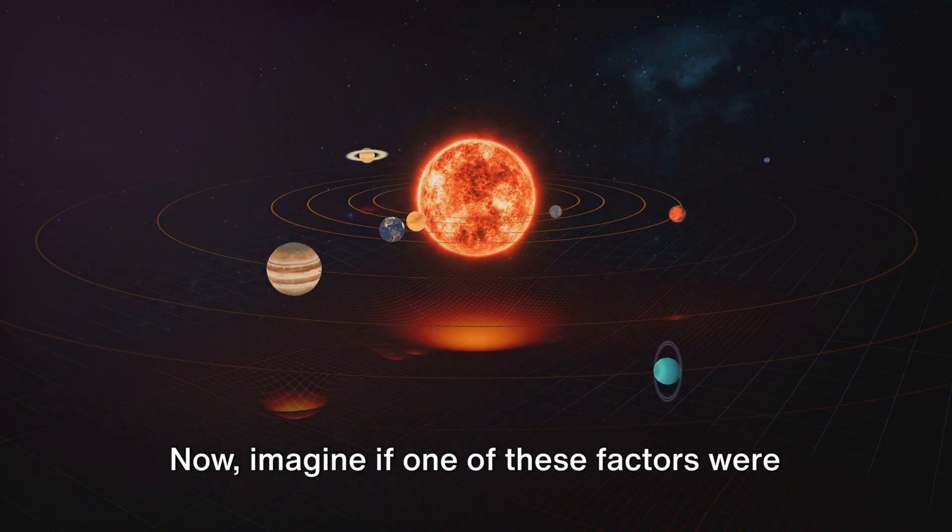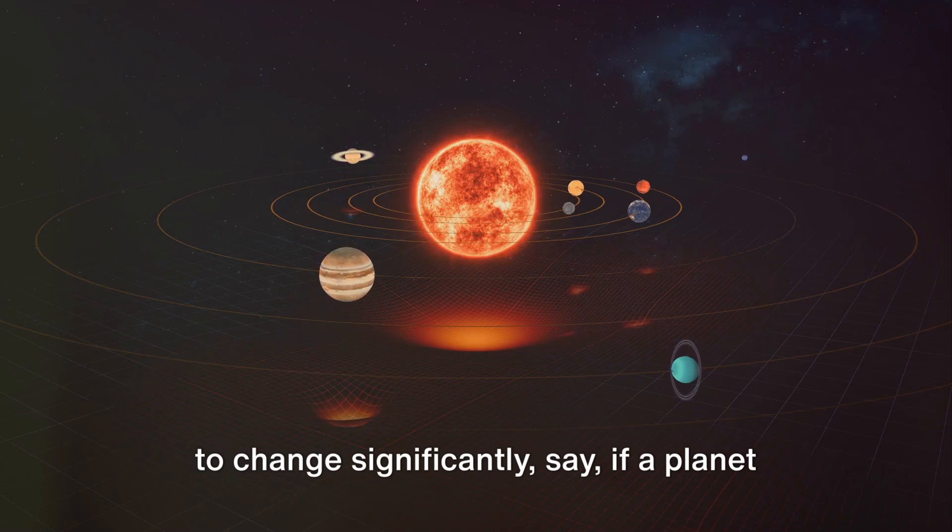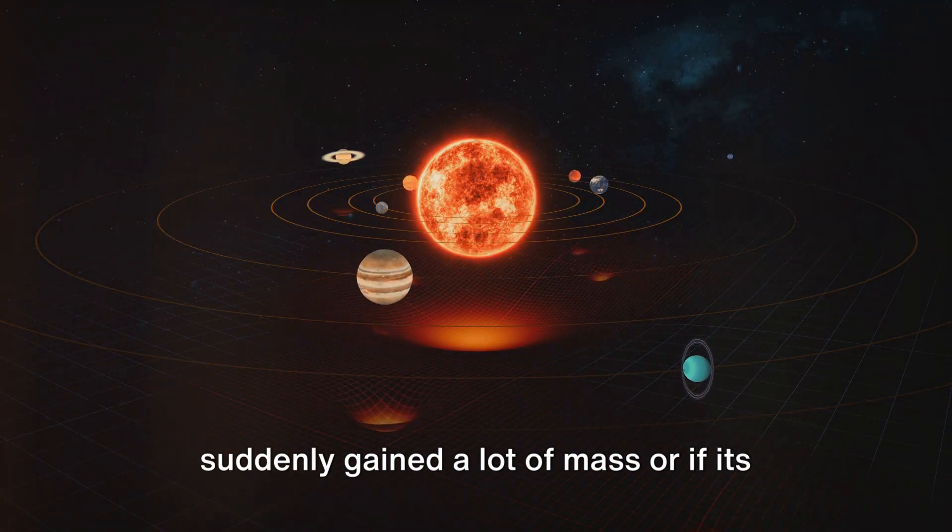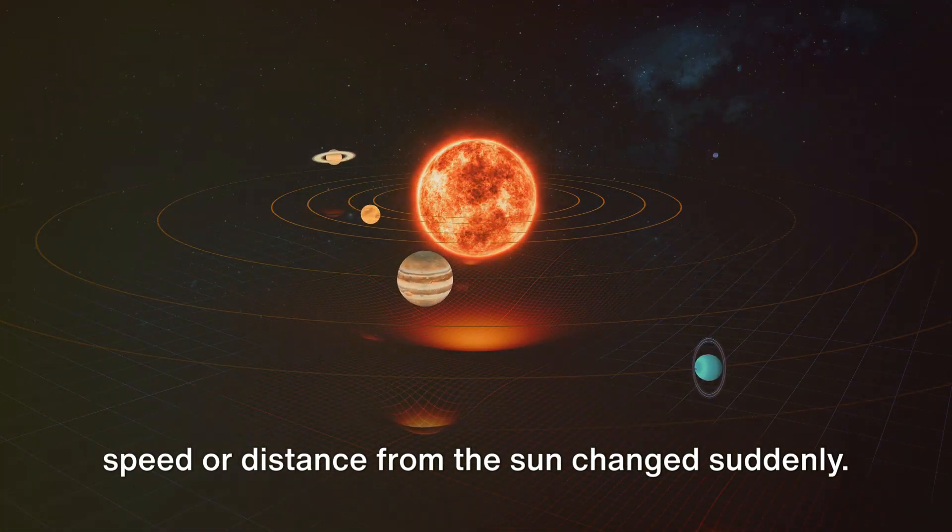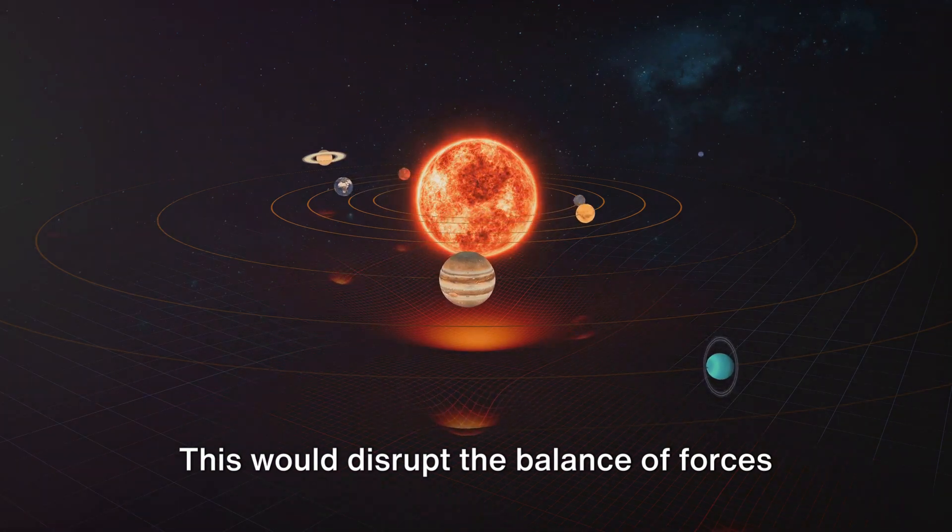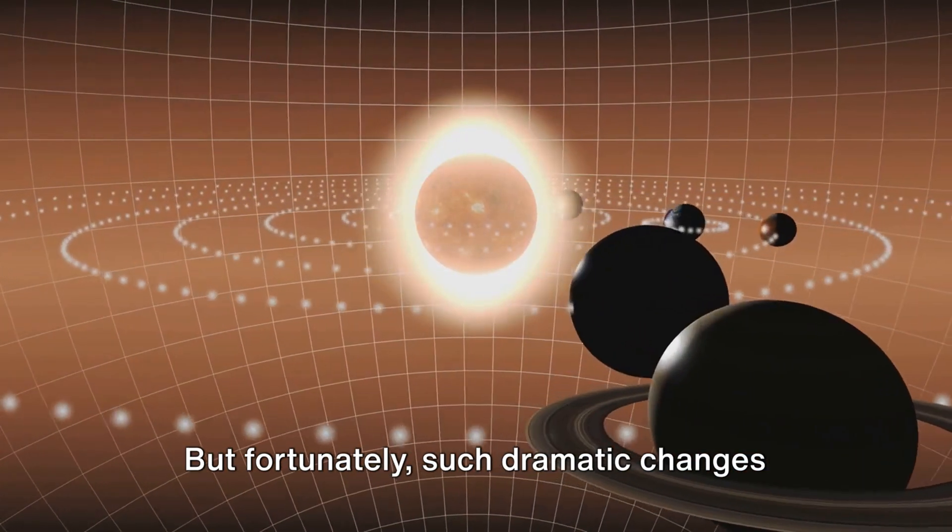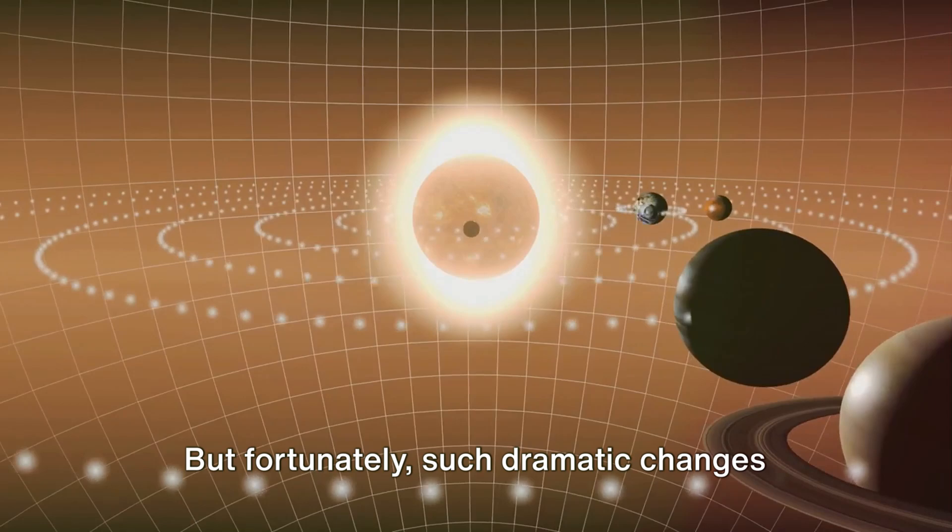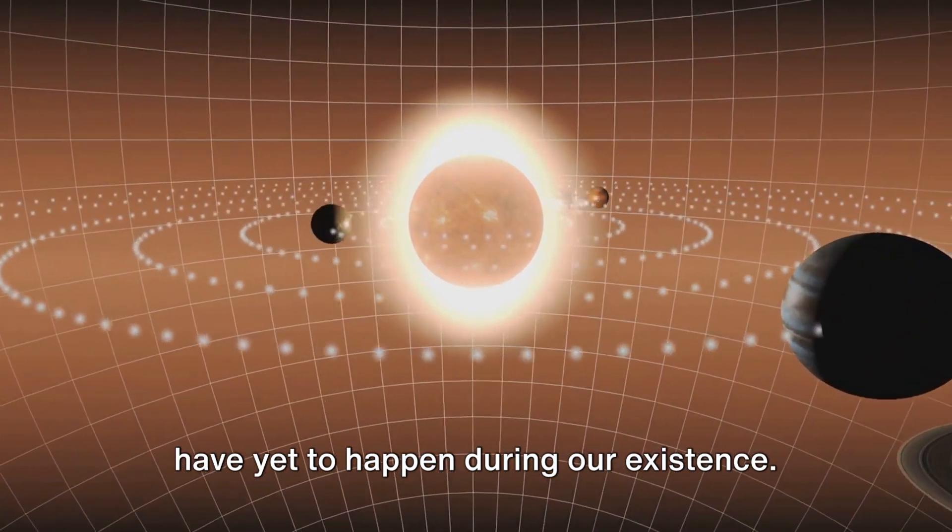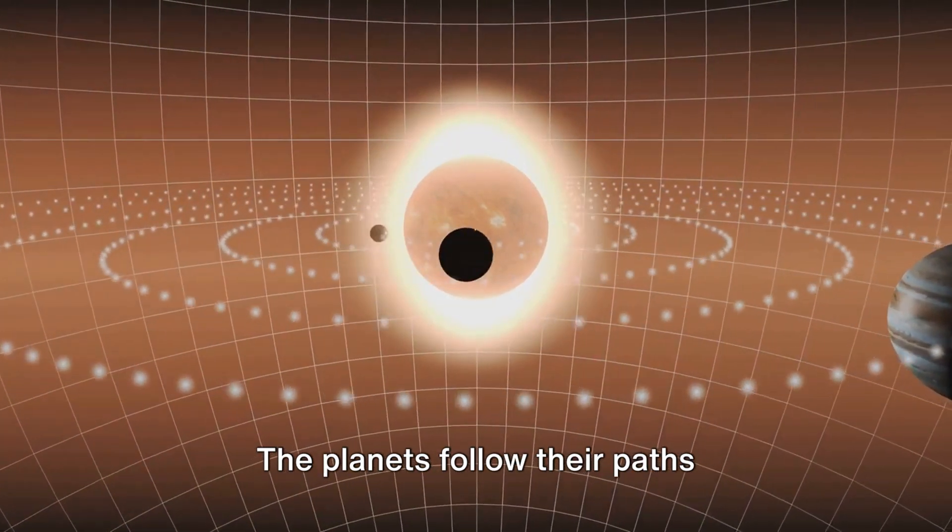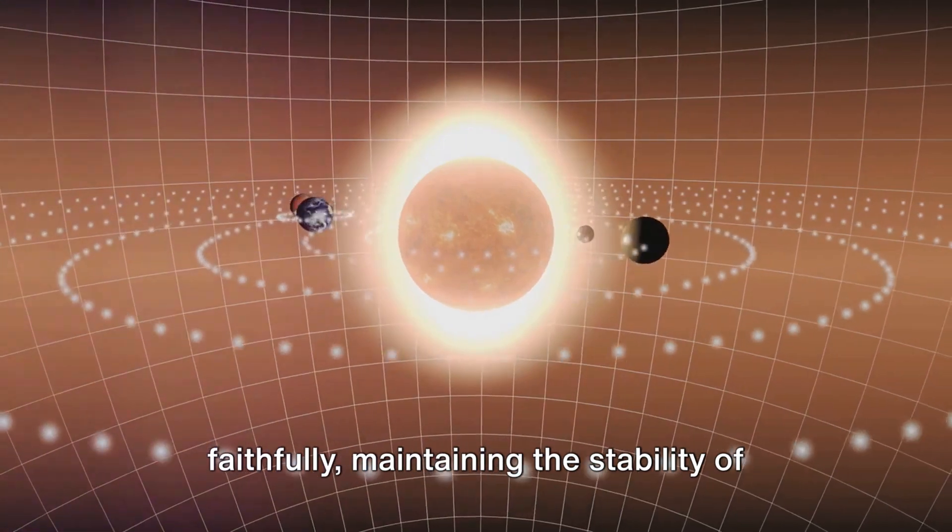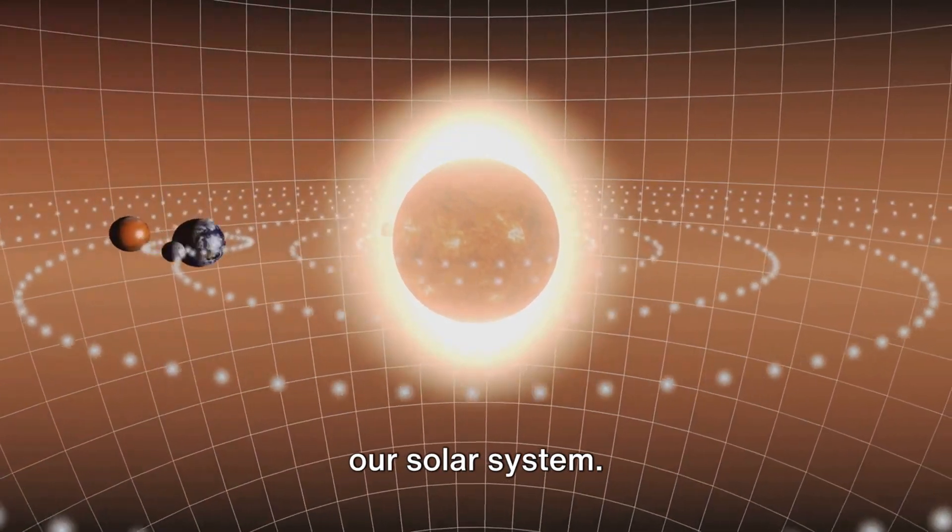Now imagine if one of these factors were to change significantly, say if a planet suddenly gained a lot of mass, or if its speed or distance from the Sun changed suddenly. This would disrupt the balance of forces, and the solar system could become unstable. But fortunately, such dramatic changes have yet to happen during our existence. The planets follow their paths faithfully, maintaining the stability of our solar system.